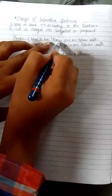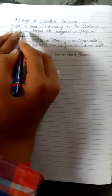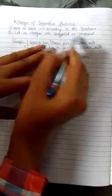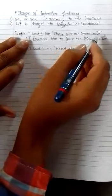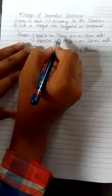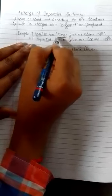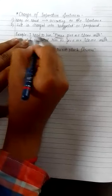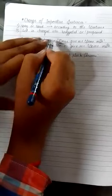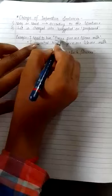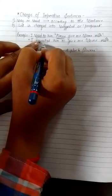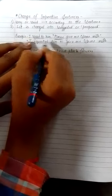Example: we have 'I said to him please give me some water.' Here the sentence is requesting because 'please' is a requesting word. So 'said to' will change into 'request' - 'I requested him'. We'll replace inverted commas by 'to', and there is no need to write 'please' again. 'I requested him to give me some milk.'